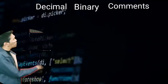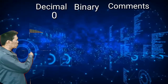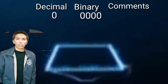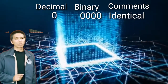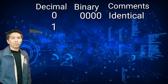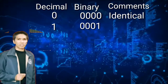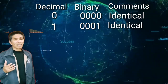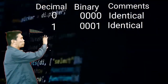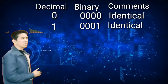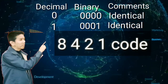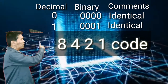Decimal 0 equals binary 0000 — comment: identical. Decimal 1 equals binary 0001 — comment: identical. We have 4 bits, each with an equivalent value: 8, 4, 2, 1. The first digit is the least significant bit and the last is the most significant bit. Decimal 2 equals binary 0010 — comment: shift to the left. Decimal 3 equals 0011, because 2 plus 1 equals 3. Decimal 4 equals 0100 — another shift to the left.